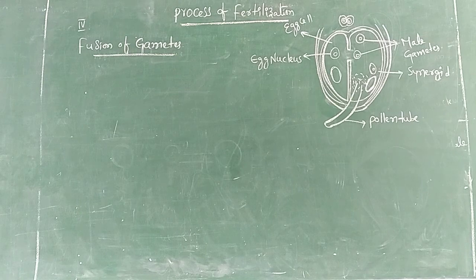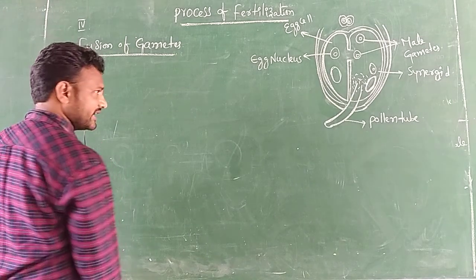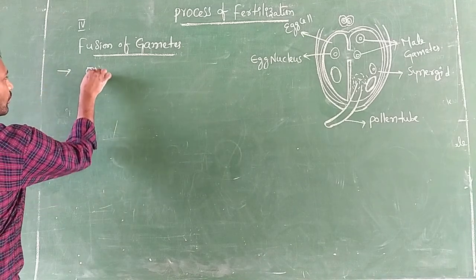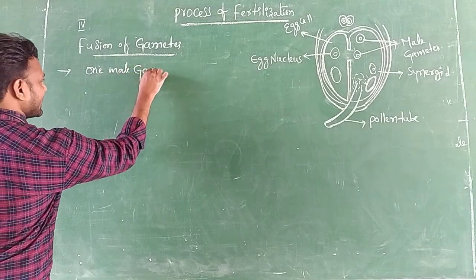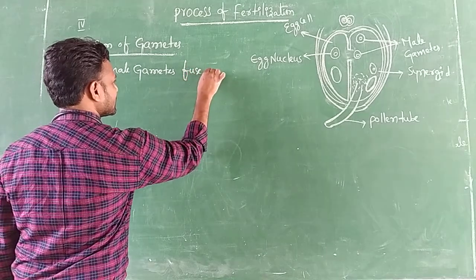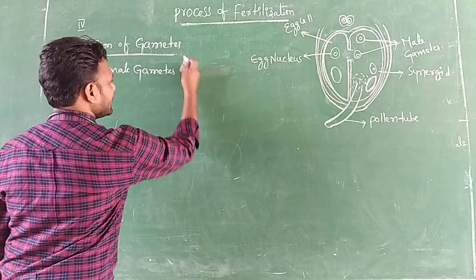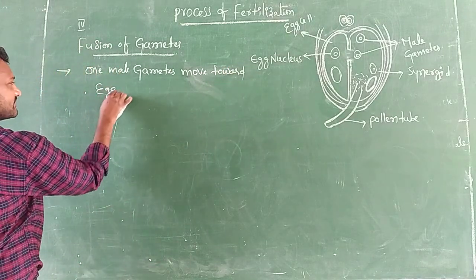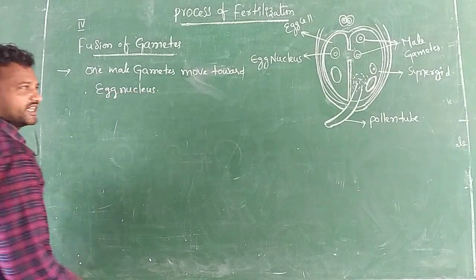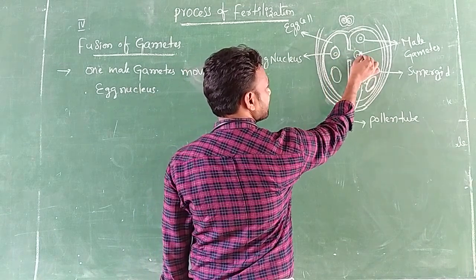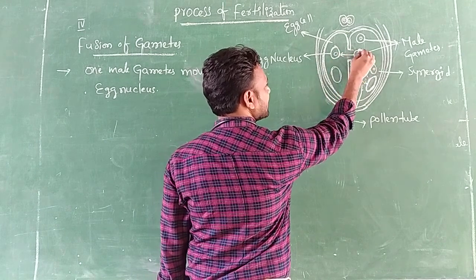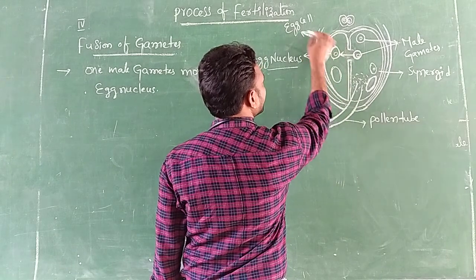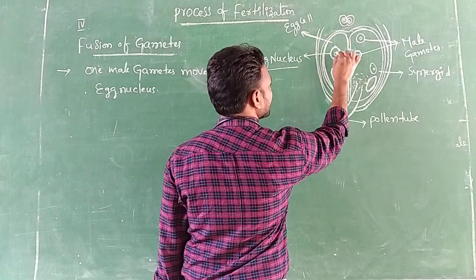The continuation of yesterday's class — we learned the fusion of gametes. The first male gamete moves towards the egg nucleus. This is the egg nucleus and this is the male gamete. The male gamete moves towards the egg nucleus because this is the egg cell, and the egg nucleus is here.